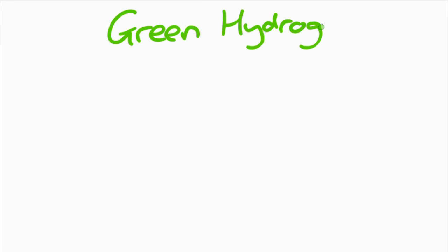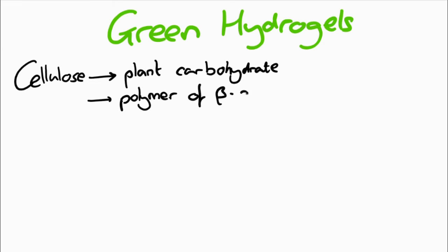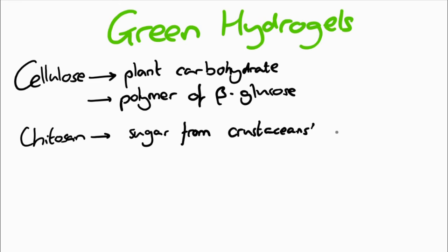Hydrogels can also come from natural sources, like cellulose, a plant carbohydrate and polymer of glucose, or chitosan, a sugar found in the shells of crustaceans. Synthetic hydrogels tend to have more controllable and reproducible properties, but a move towards green hydrogels could mean a more sustainable future for this technology.